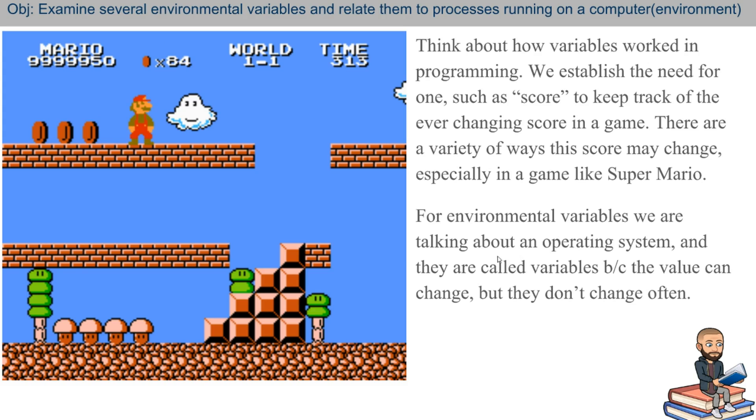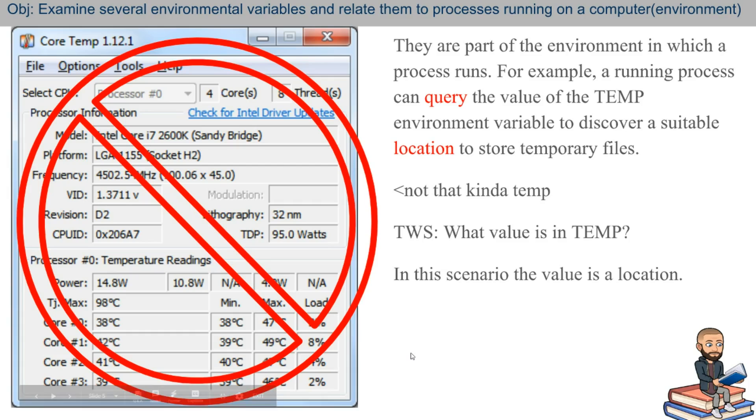Now for environmental variables, we're talking about an operating system, not a game. And they're called variables because they can change, but they are not changed very often. So one such variable is temporary. And I'm not talking about like the temperature of your computer, but the variable called temp is usually for temporary files. So for example, if you're running a process, that process can query the value of temp. So it knows where it'll store or save the files that are just going to be temporary for that program.